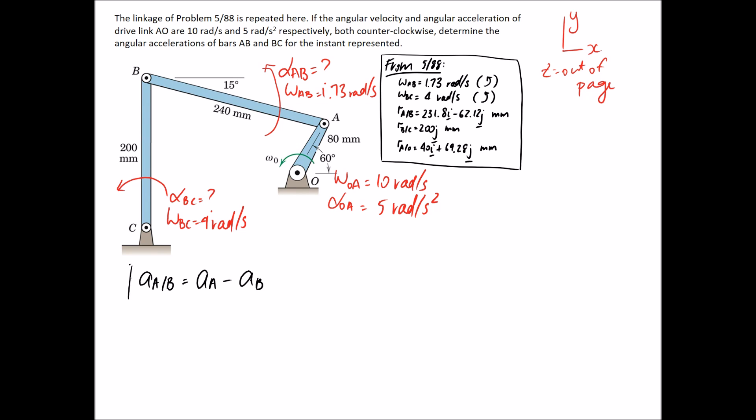I'm going to go through and find each of these parts individually. Let's start with the relative term. We know that since A and B are connected by a rigid member which is rotating, we're going to need to consider both the normal and tangential components of the acceleration. First of all, the normal part.